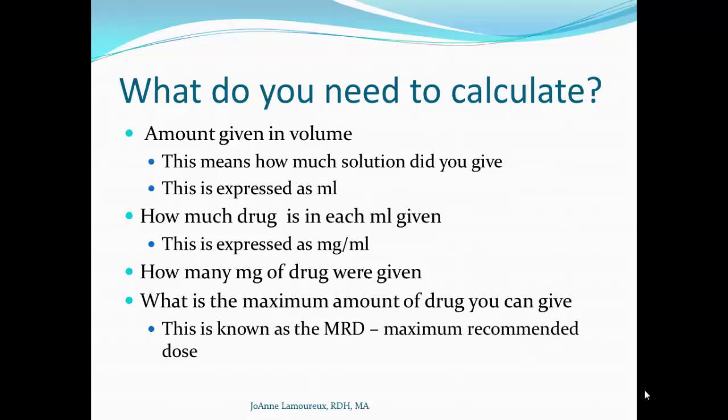So what do you need to know in order to calculate dosages? The first thing is how much anesthetic you gave in volume — how much solution you injected into the patient, expressed in milliliters. The second thing is how much drug is in each milliliter you gave, expressed as milligrams per milliliter. You then multiply these two together to determine exactly how many milligrams of drug were given to the patient.